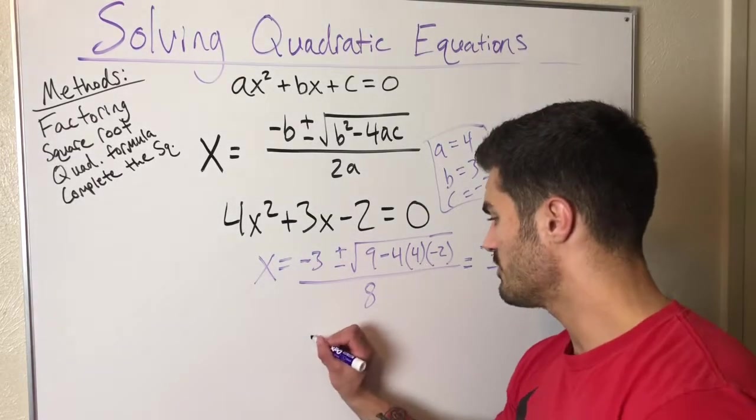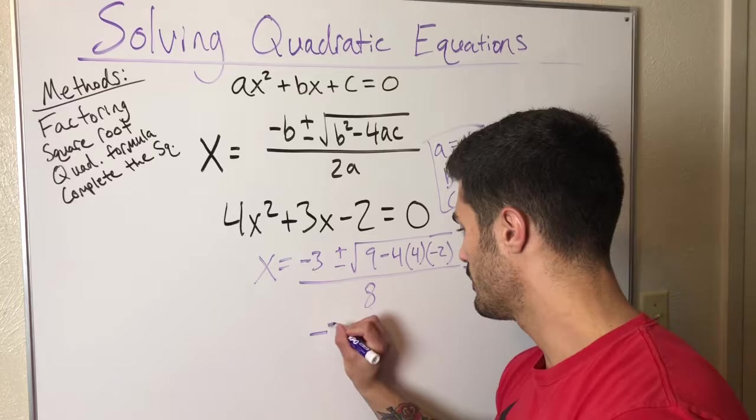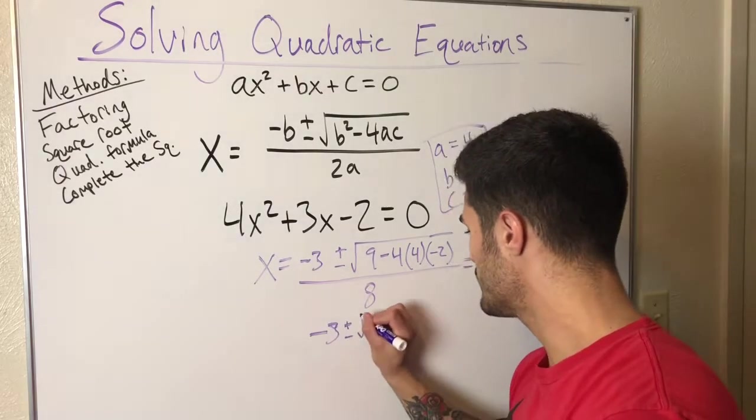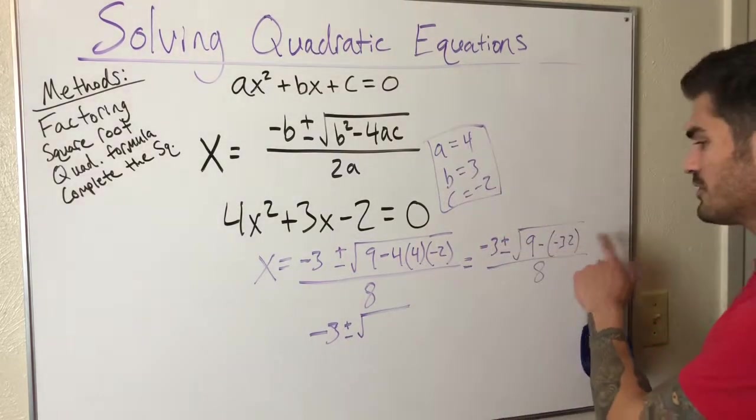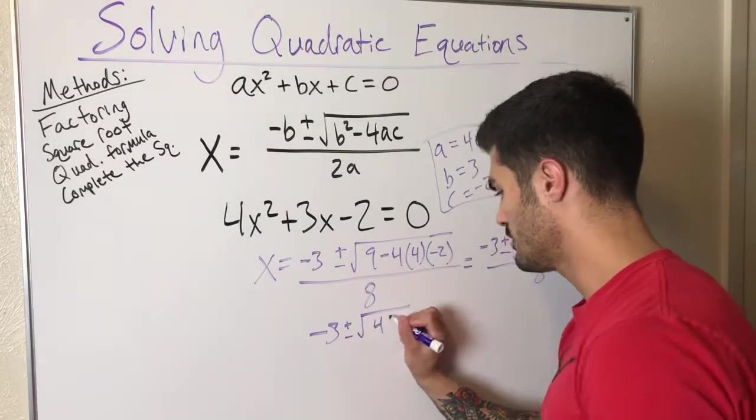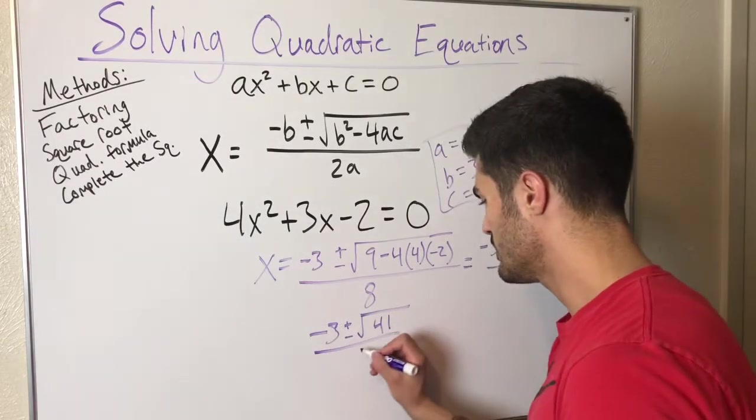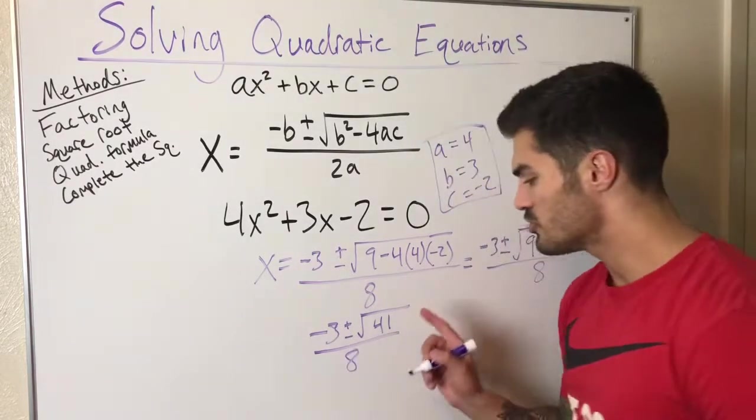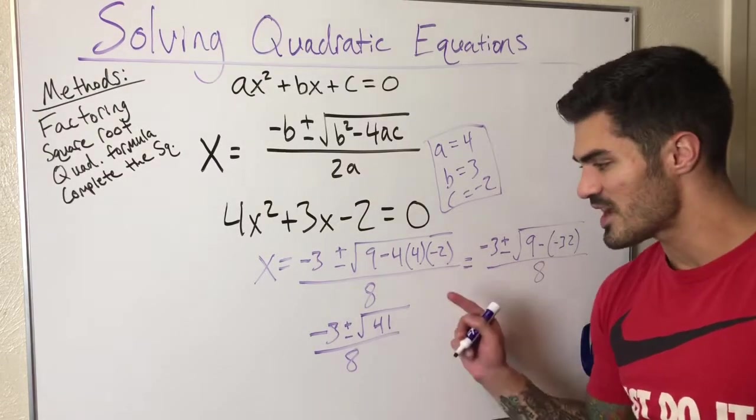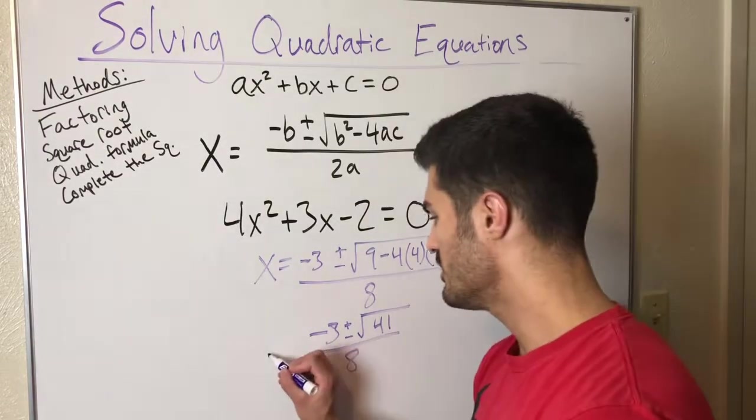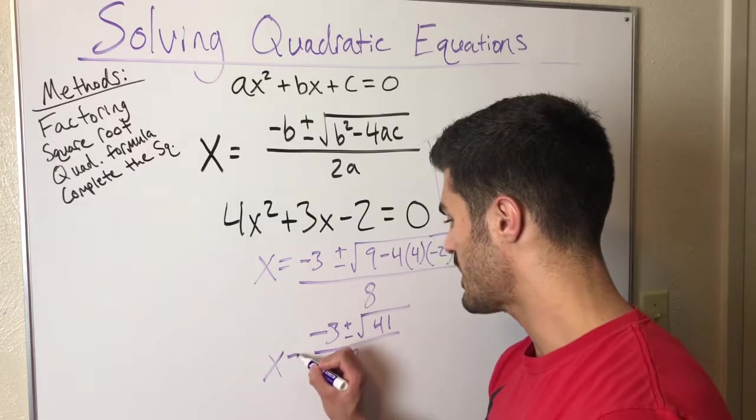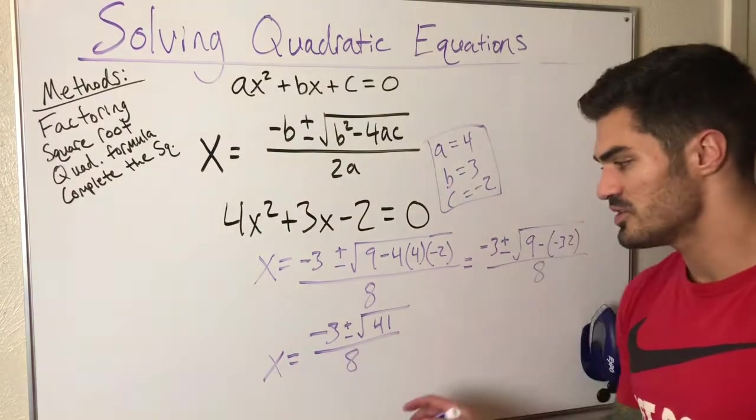9 minus negative 32, that's 9 plus 32, right? So I have negative 3 plus or minus square root of 9 plus 32, that's 41, all over 8. You can try to simplify this radical, you won't be able to. So this is actually as simple as our answer gets. It's okay if it doesn't look that pretty at the end, as long as you simplify as much as you can.